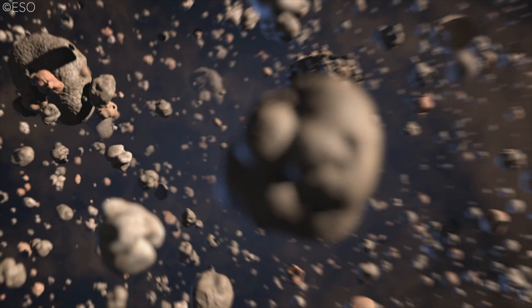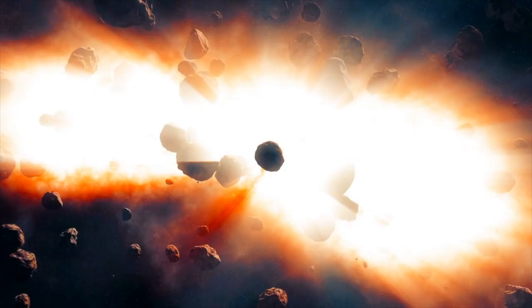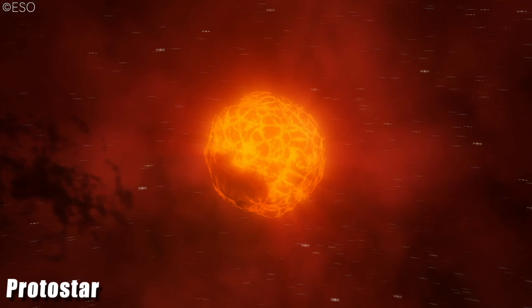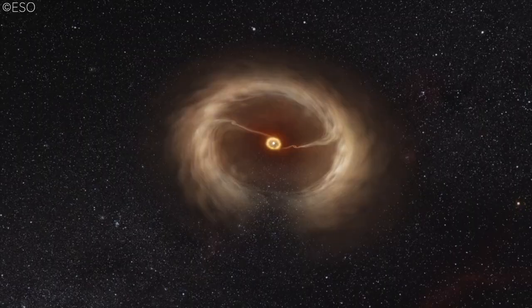Deep inside these clouds, turbulence forms knots that are sufficiently massive for the gas and dust to begin collapsing due to their own gravitational pull. The material at the cloud's core starts to heat up as it breaks apart. This heated core at the center of the collapsing cloud is referred to as a protostar that will one day eventually turn into a star.